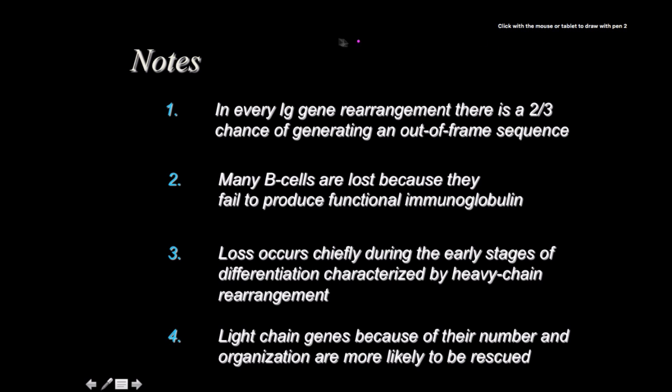What we didn't really discuss about the mechanisms generating new receptor identities for B-cells is the fact that they're messing with the DNA—cutting things out, putting stuff in, moving elements left and right. It makes sense that the majority of the time this is going to throw things out of our reading frame sequence. Because of this, nearly two-thirds of our B-cells aren't going to make it. This loss occurs chiefly during the early stages of differentiation characterized by heavy chain rearrangement—which is the hardest job, so we want to do that first before moving on to the light chain.